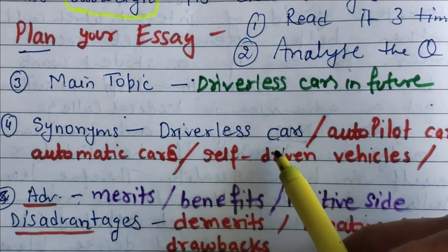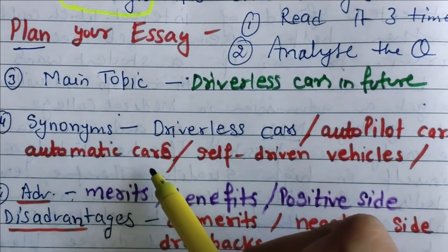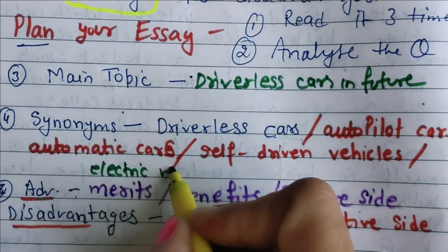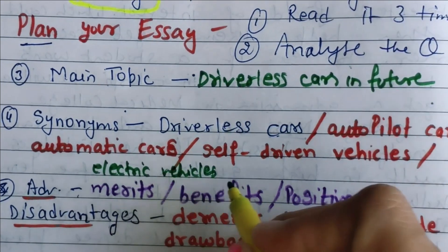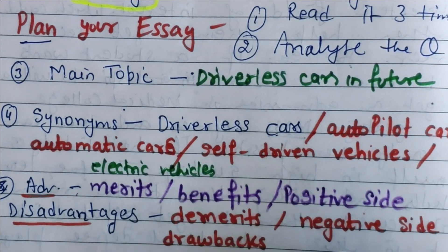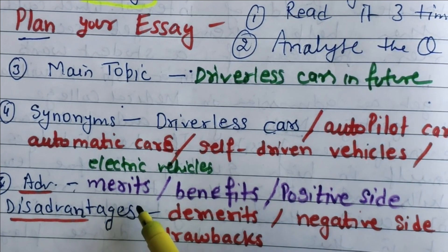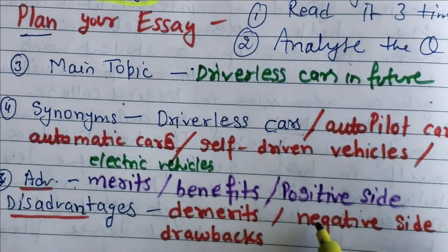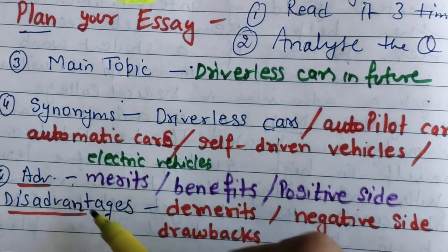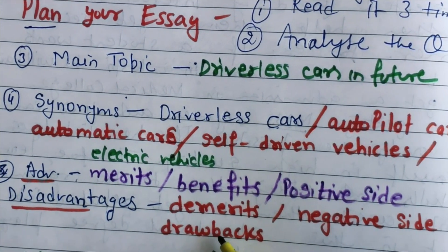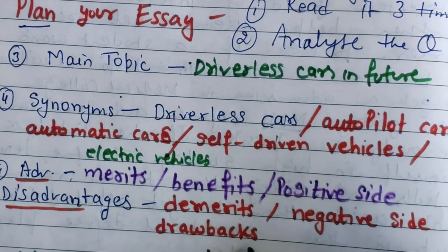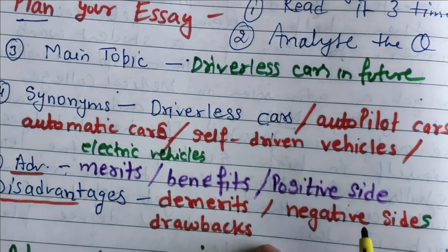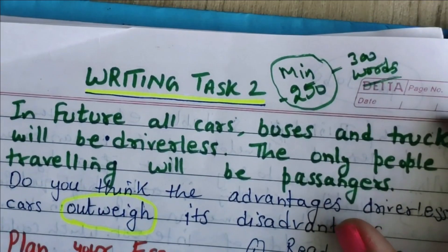Synonyms for driverless cars: autopilot cars, automatic cars, self-driving cars, electric vehicles, self-driving electric vehicles, e-vehicles. For advantages, you can write: merits, benefits, positive sides. For disadvantages, similar words can be: demerits, negative side, drawbacks. You can use many more words instead of advantages and disadvantages.